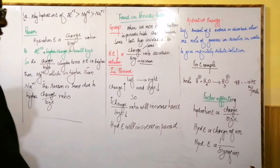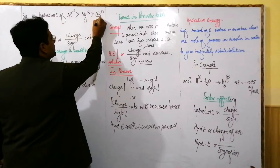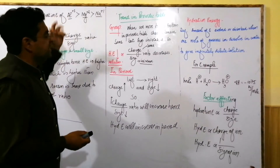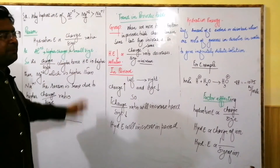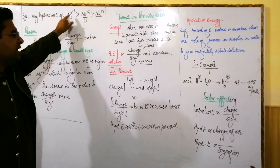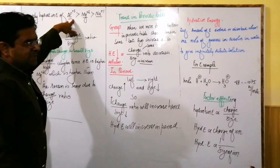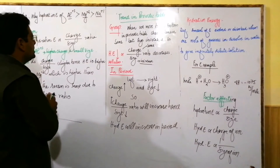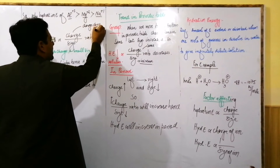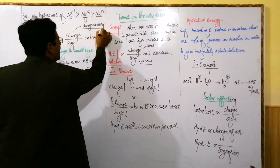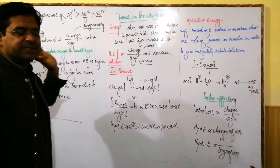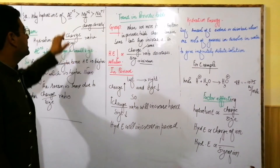Now let's do a short exercise question. Three elements are given: Na⁺¹, Mg⁺², and Al⁺³. We need to determine which has the highest hydration energy. As we have studied, the higher the charge and smaller the size, the higher the hydration energy. Al⁺³ has the highest charge-to-size ratio — also called charge density — so its hydration energy is the greatest.